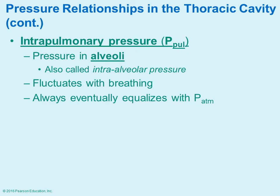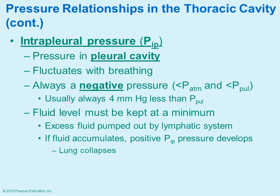In terms of measuring the pressure within different areas of the body, intrapulmonary pressure is the pressure in the alveoli — that's where gas exchange is occurring. This pressure can fluctuate during the breathing process and eventually wants to equalize with atmospheric pressure. Intrapleural pressure is the pressure in the pleural cavity, which surrounds the lungs. That pressure also fluctuates with breathing, but it's always a negative pressure.